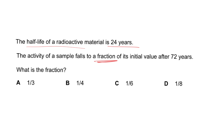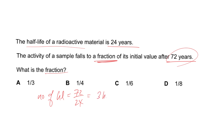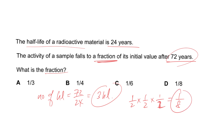In Question 5, the half-life of a radioactive material is 24 years and the activity falls to a fraction of its initial value after 72 years. Number of half-lives = 72 ÷ 24 = 3. Each half-life halves the sample, so after three half-lives the fraction remaining is (1/2)³ = 1/8. One-eighth of the sample remains; seven-eighths has decayed. The answer is D.